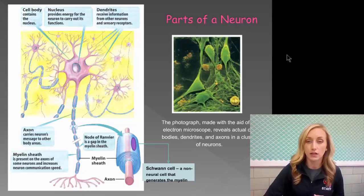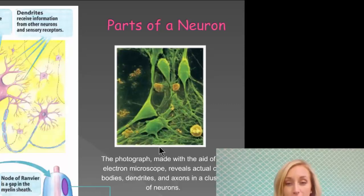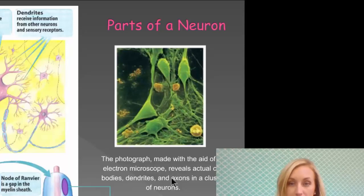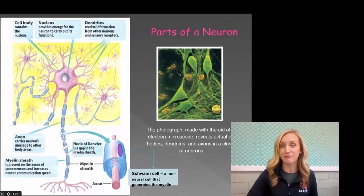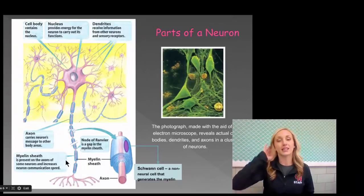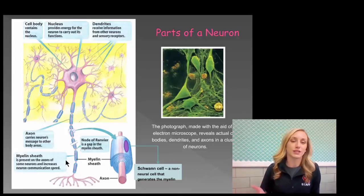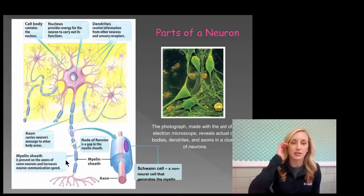This is a real-life picture over here on the right of the neuron. The photograph made with the aid of an electron microscope reveals actual cell bodies, dendrites, and axons in a cluster of neurons. Notice that it seems kind of crazy, but it's exactly what it looks like. On the left is a more organized diagram that allows us to see the parts a little bit better.